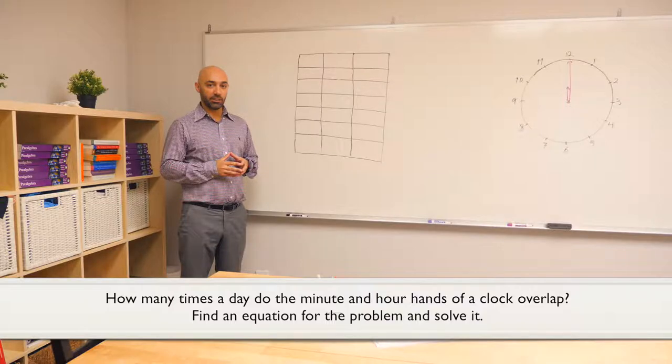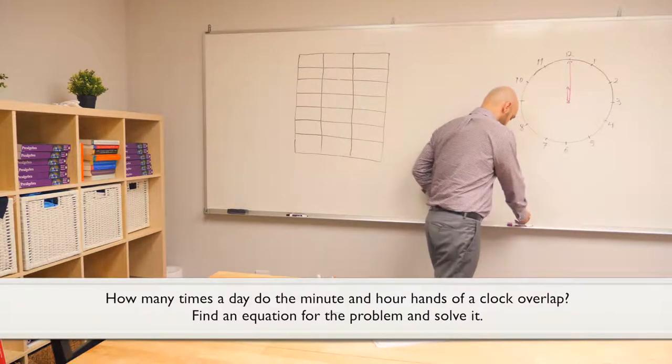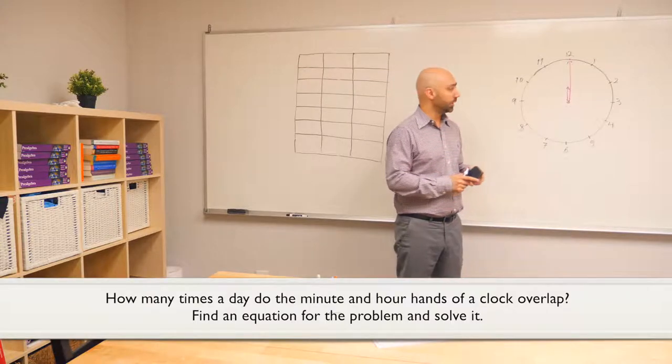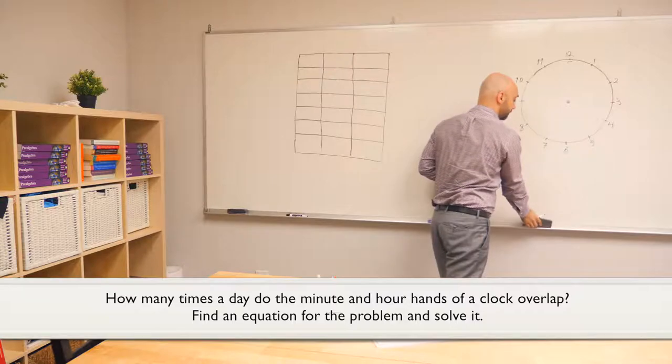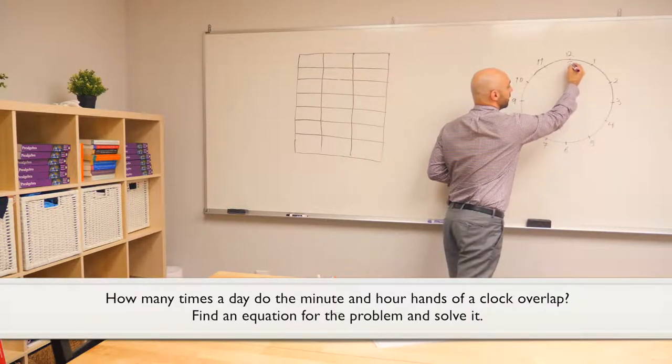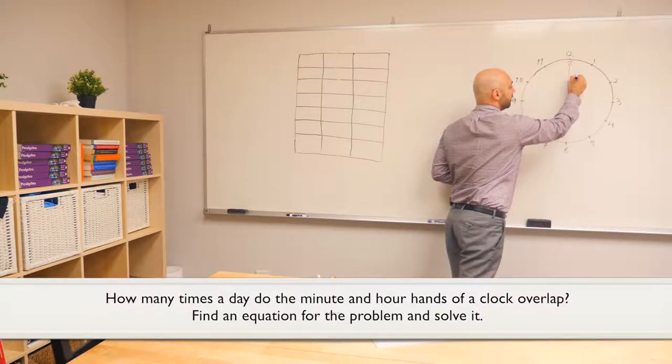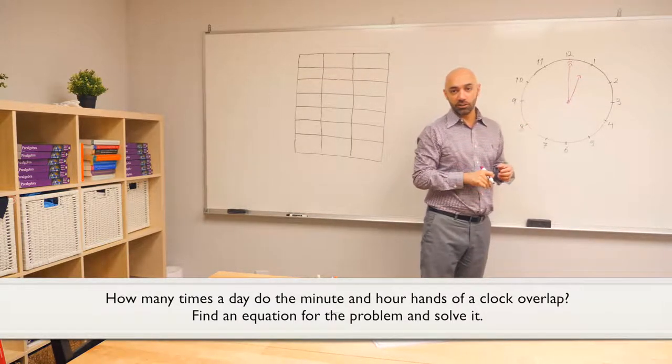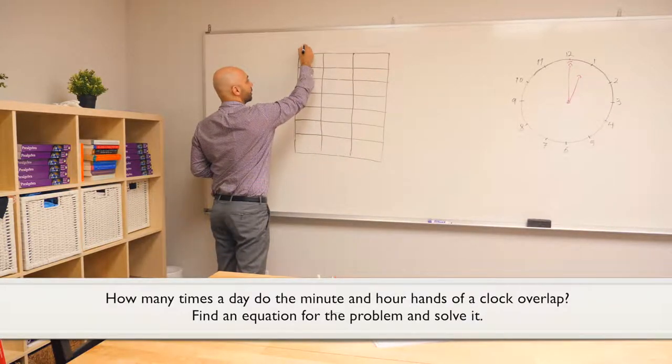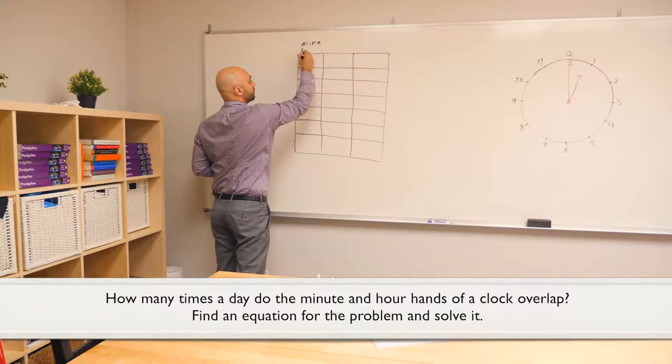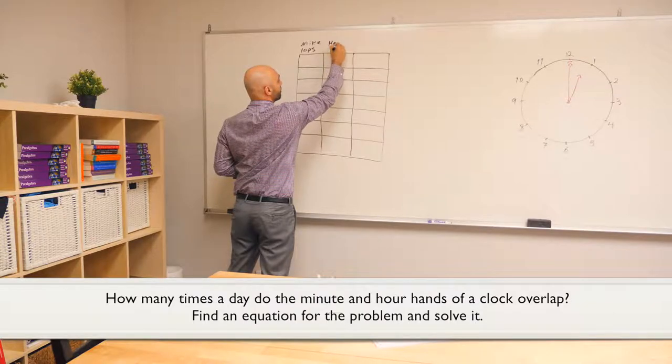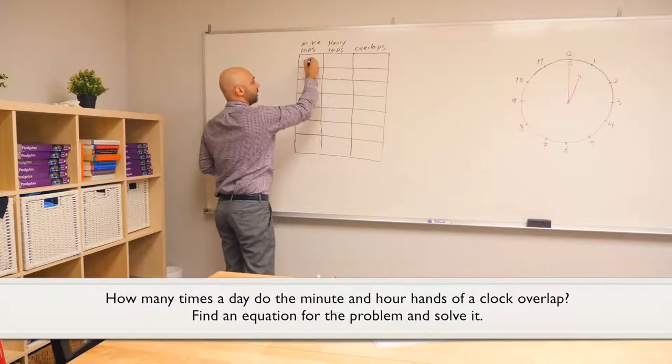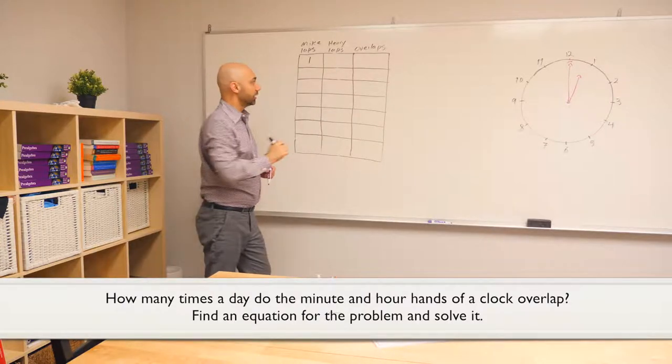Let's go to the clock and see what's happening in the first lap. The race starts at midnight. Mike is going to run ahead and make its first lap. When it finishes its first lap, Mike ends up at the same location while Henry is still going forward. So, within the first Mike lap, there is no overlap. Let's write that information in our table. I'm going to call the first column Mike, the second Henry, and the number of overlaps in the last column. So, first lap for Mike, there is no overlap.